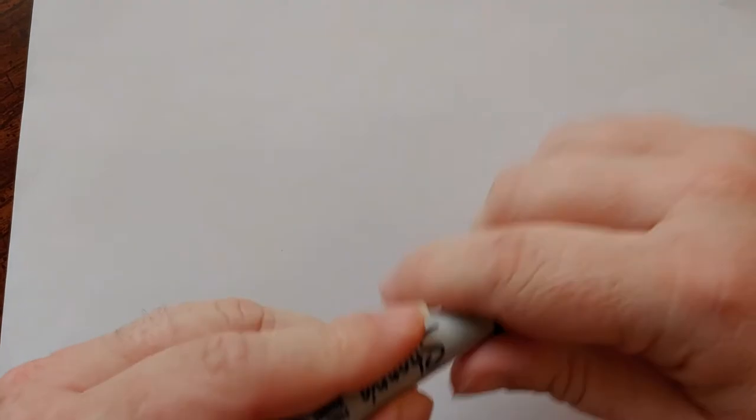So what you're going to need for this is basically just pencil and paper. You can use a ruler if you want to help measure things out. I'm going to be using a Sharpie just so you can see it better, but I would use a pencil.